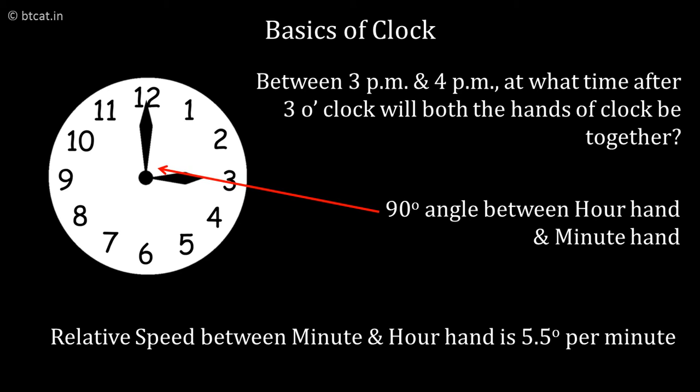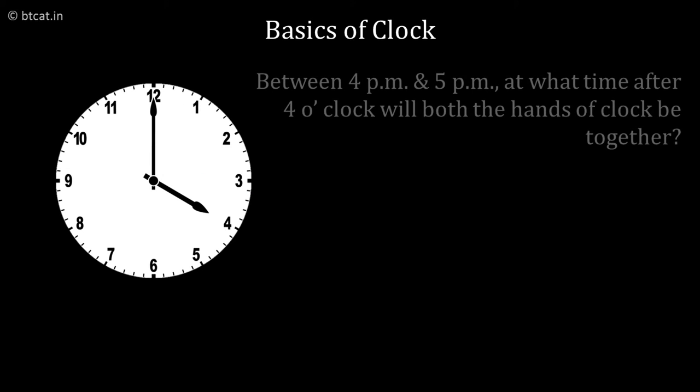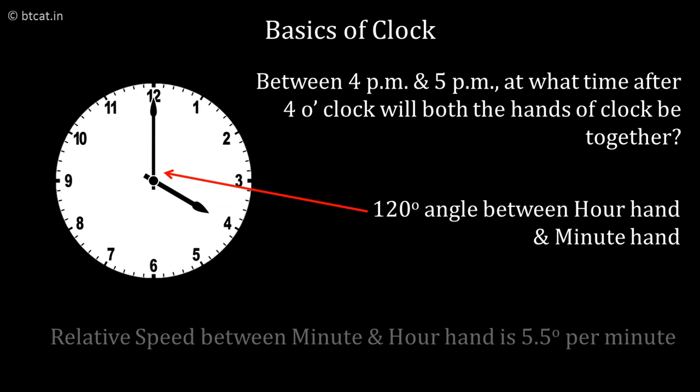If I want to find between 4 and 5, after what time will they meet after 4 pm, the funda is the same. The answer is 120 degrees divided by 5.5, and 120 came because at exactly 4 pm the angle between the minute hand and hour hand is 120 degrees. Between 5 and 6, the answer is 150 upon 5.5. Between 2 and 3, the answer is 60 upon 5.5, and so on.